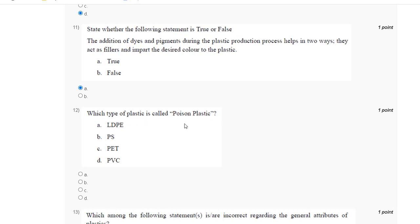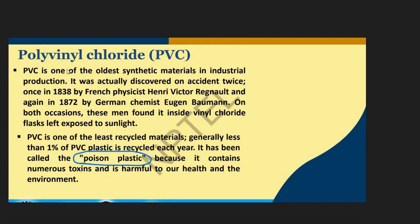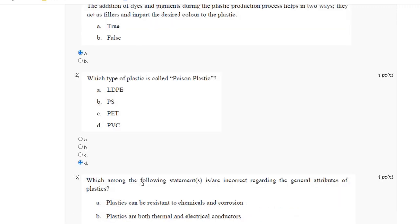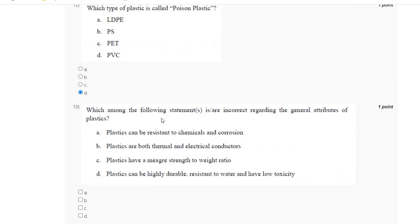Question number twelve: which type of plastic is called poison plastic? PVC is a poison plastic. The correct answer for question number twelve is D, PVC.